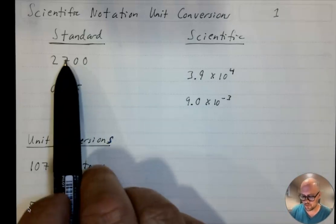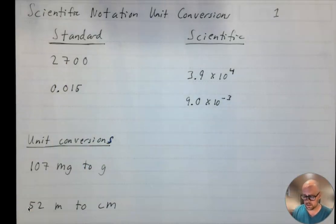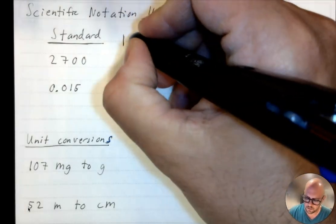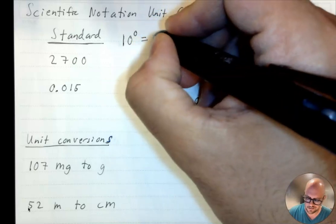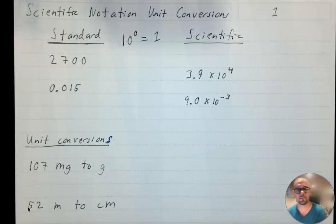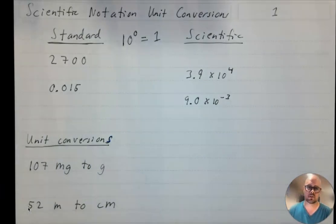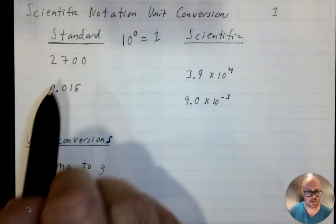We have some numbers to convert into scientific notation and some numbers to convert into standard notation. When I talk about scientific notation, we do a lot of comparison with the number 1. Scientific notation is based on powers of 10, and 10 to the 0 power is 1. So I'm going to talk about big and small numbers here relative to 1. So the number 2700 is big.